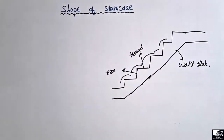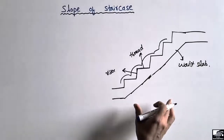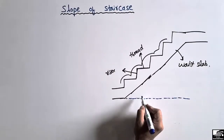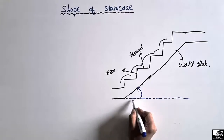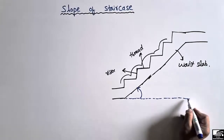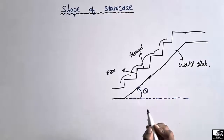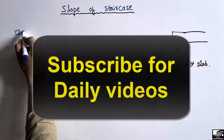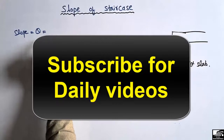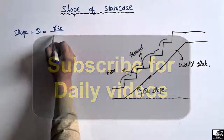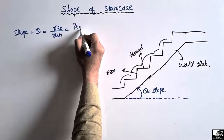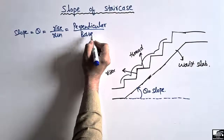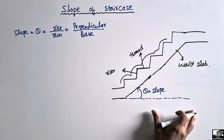Now, what is the slope of the staircase? The slope of the staircase is basically the angle which the staircase makes with the ground — the angle it makes with the horizontal reference line. This angle is known as the slope. Slope, or theta, will be equal to the rise of the staircase divided by the run of the staircase, or we can say the perpendicular distance divided by the base distance.